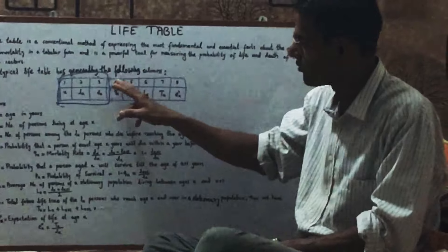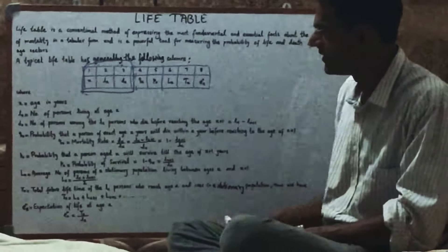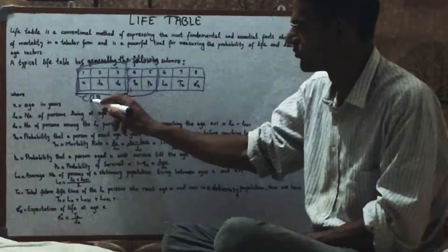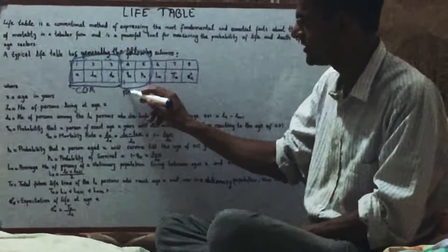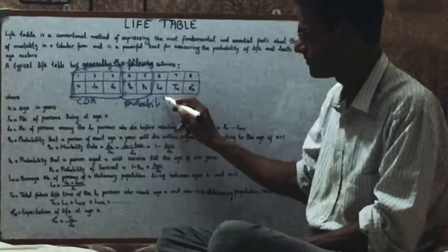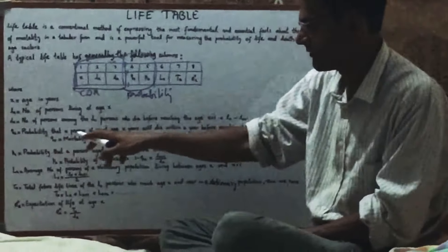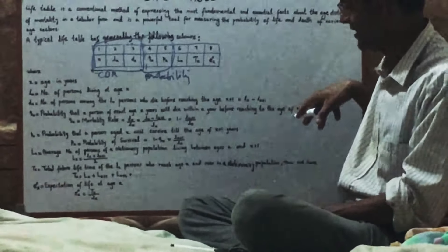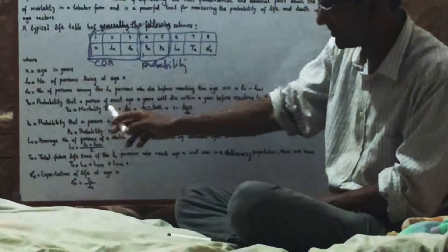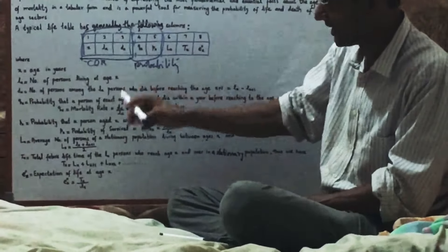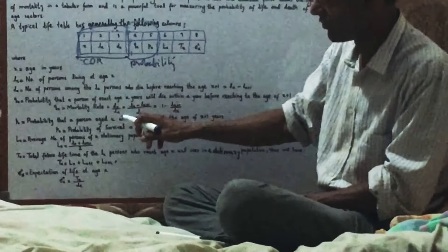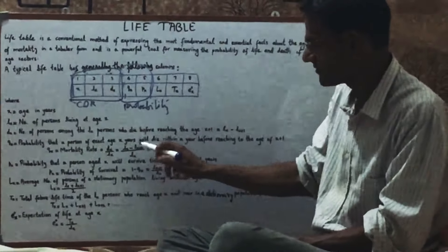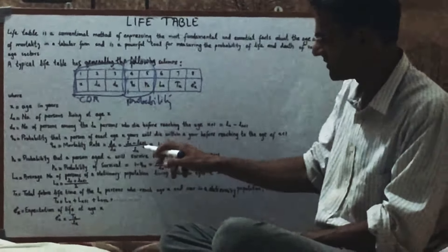For the fourth and fifth columns, these are probabilities. QX is the probability that a person of the exact age X will die within a year before reaching age X plus 1. QX is the mortality rate, and it is calculated as deaths over number of persons, which is LX minus LX plus 1 divided by LX.